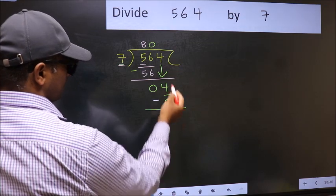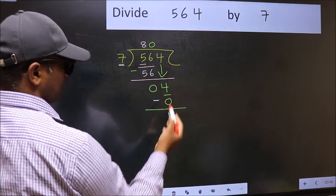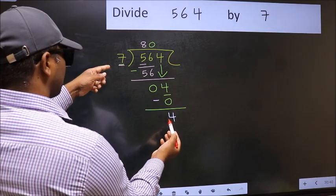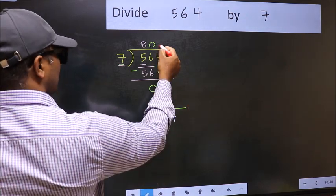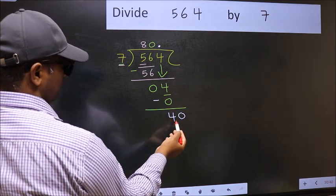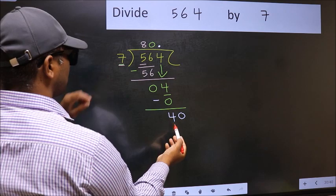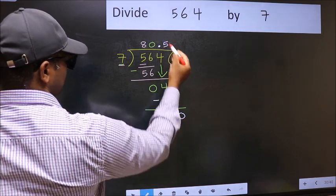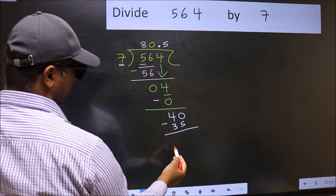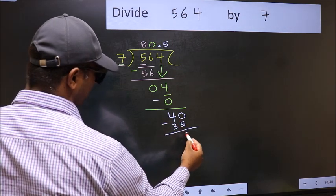Over here, we did not bring any number down. And 4 is smaller than 7. So 40. A number close to 40 in 7 table is, 7 times 5, 35. Now you should subtract. 40 minus 35, 5.